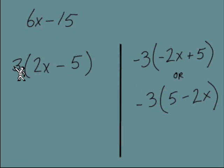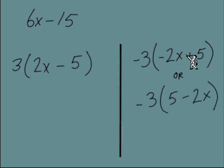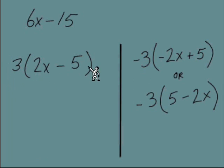We see the same pattern: if our GCF has its sign changed, then the terms inside the parentheses also have their signs changed. A positive 3 on the left is a negative 3 on the right. Inside the parentheses, a positive 2x on the left is a negative 2x on the right, and the negative 5 on the left is a positive 5 on the right. All three of these expressions are equivalent — they all equal 6x minus 15. By changing the sign of the GCF, we can change the signs of the terms inside the parentheses and everything is still equal. It's still a legit move; we've maintained equality.